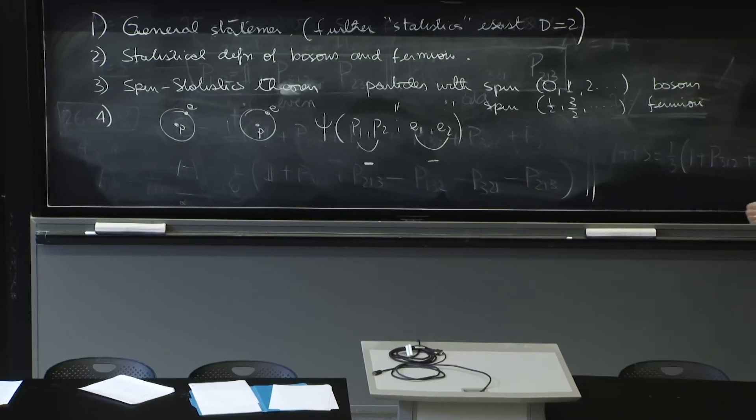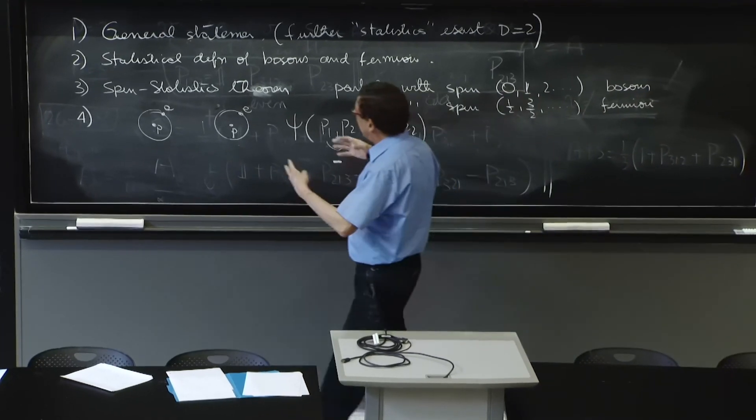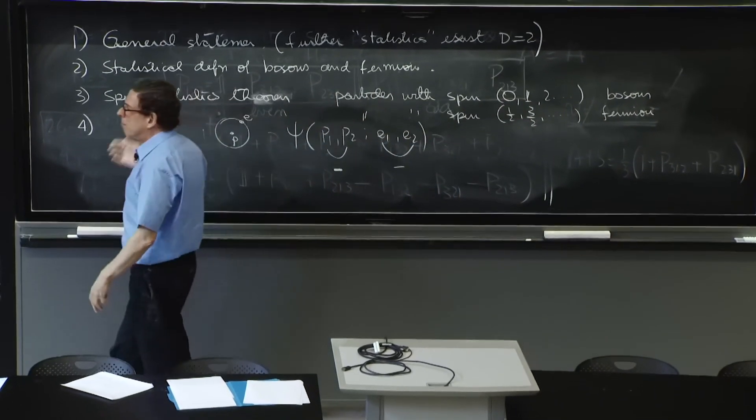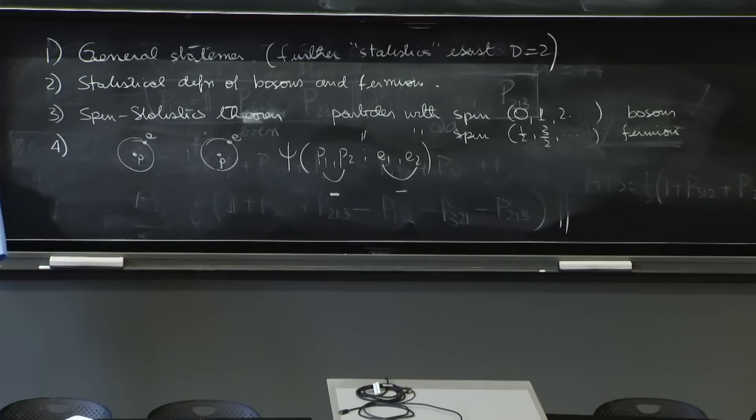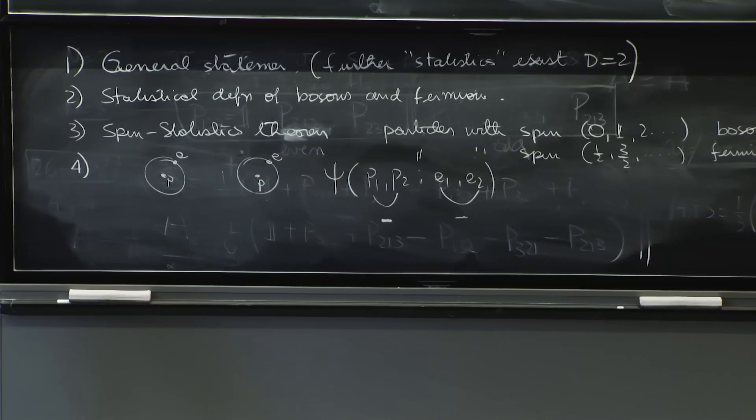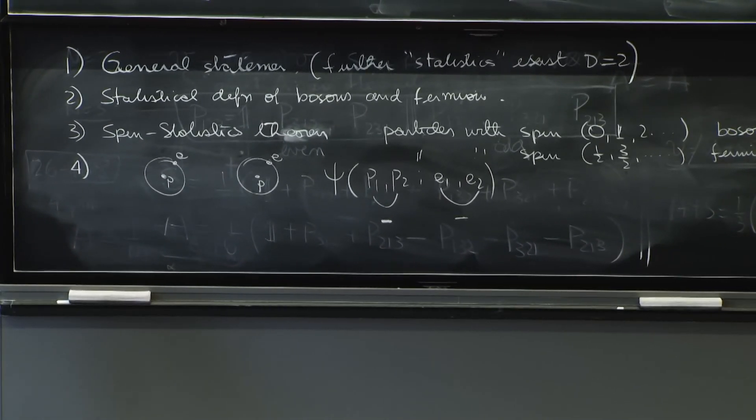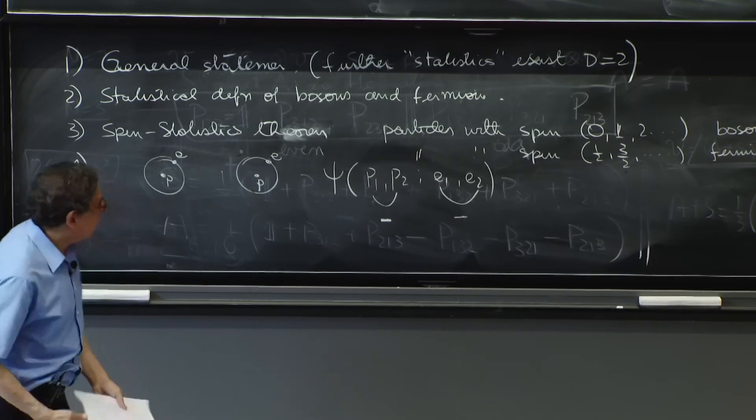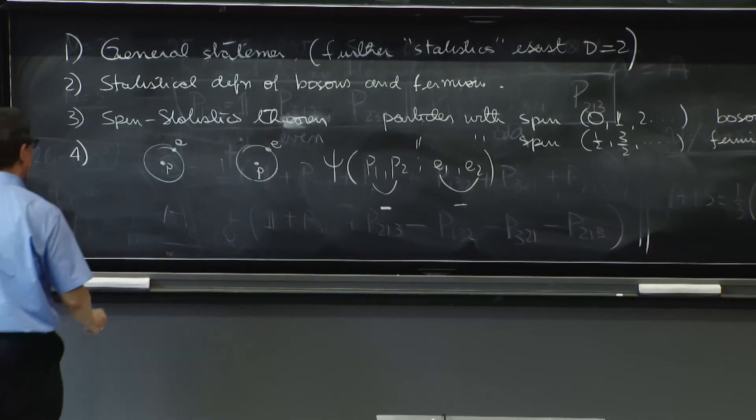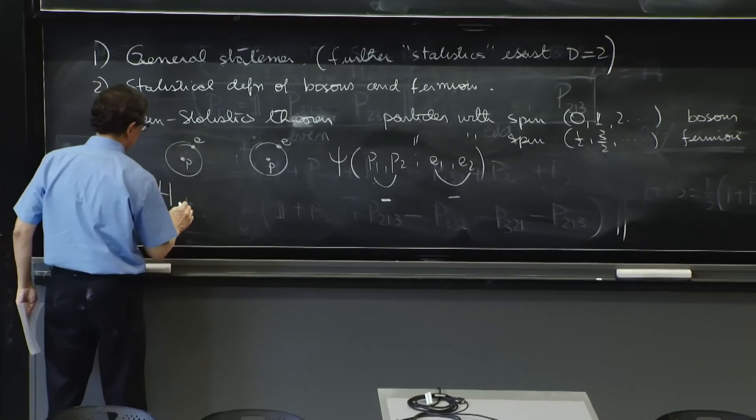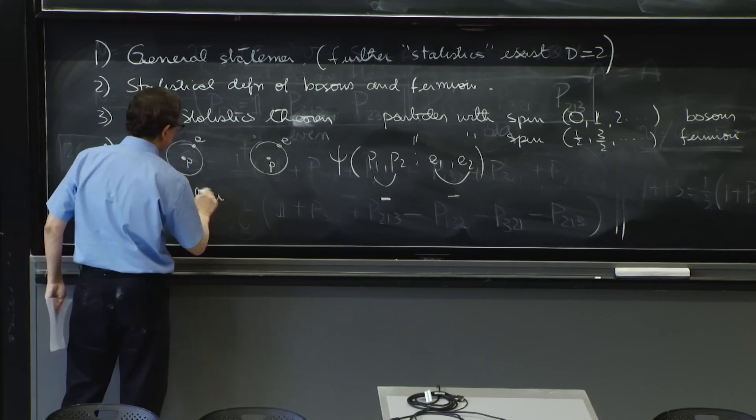So these statistical properties build up, so an object built with a number of bosons or a number of fermions will be a boson or a fermion depending on those numbers. So that's a nice thing. So the hydrogen atom is a boson.